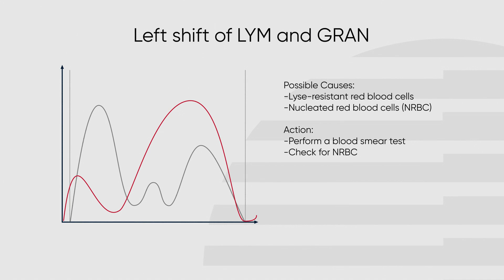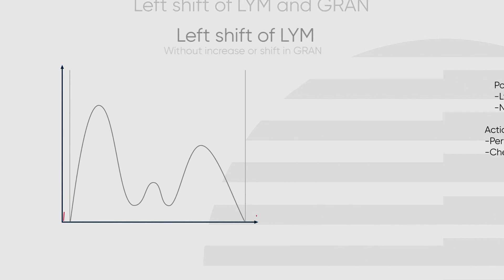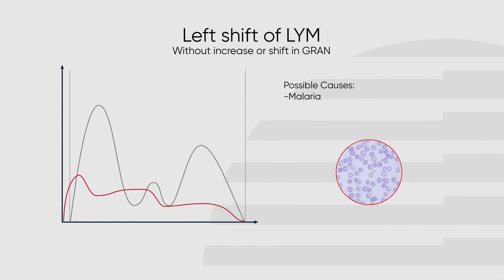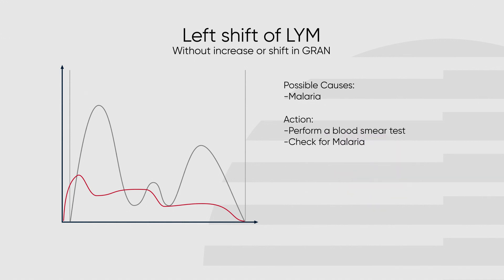If this occurs, perform a blood smear and check for nucleated red blood cells or other irregularities. A left shift of the lymphocyte peak without an increase or shift of the granulocytes may be caused by malaria, as malaria-infected red blood cells are more resistant to lysis and are therefore counted as lymphocytes, causing a false increase and shift of the lymphocyte peak. If this occurs, perform a blood smear and check for malaria-infected cells.